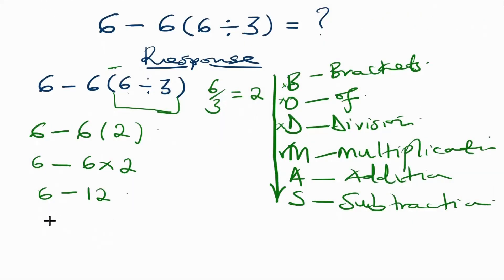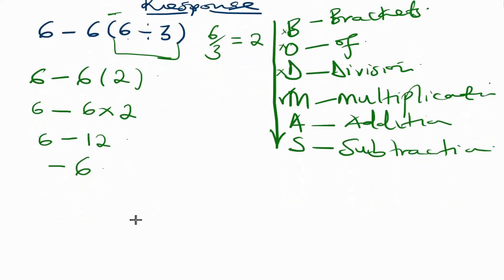Therefore the right answer to our expression, which is 6 minus 6 into 6 divided by 3, equals negative 6. So now this one becomes our correct response or result for this expression.